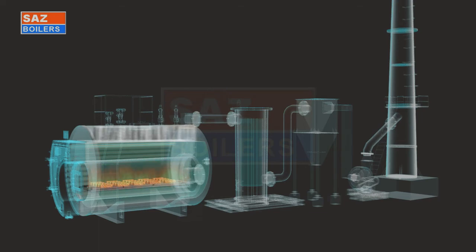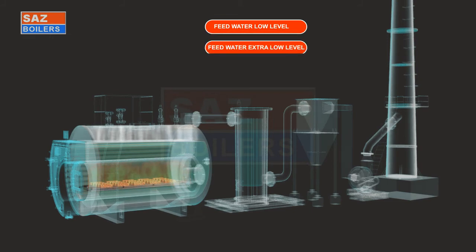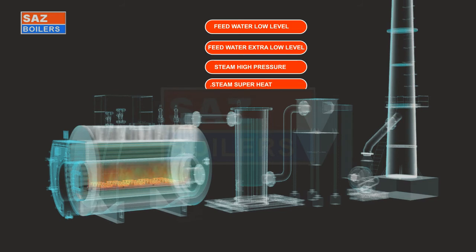Steam boiler is protected with safeties such as feed water low level, feed water extra low level, and steam high pressure steam superheat. In case of excess steam pressure, safety valves open, letting off steam outside.